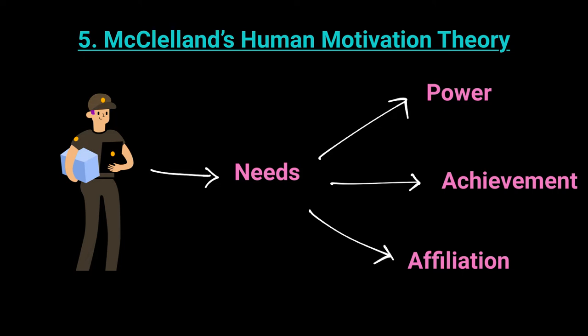We're going to talk about each of these in a little bit more detail - what does it mean, and how do you gauge what type of need each individual worker has. Three categories: need for power, need for achievement, need for affiliation. But that's not all. He said that among all of these, there will be one that will be more dominant in everyone.